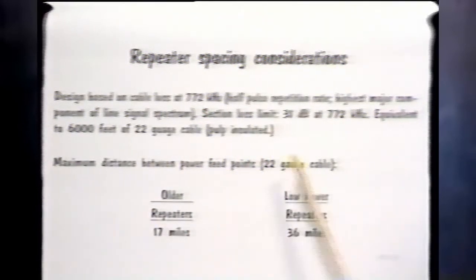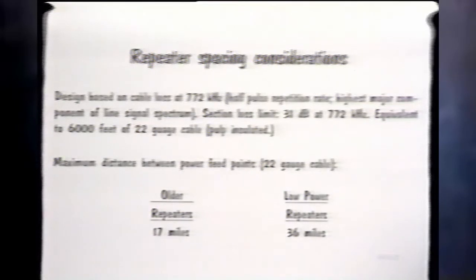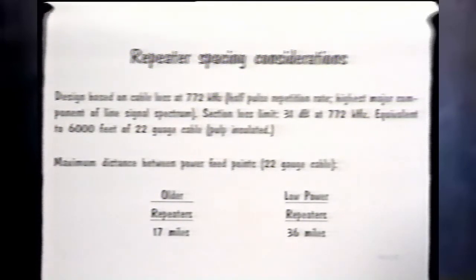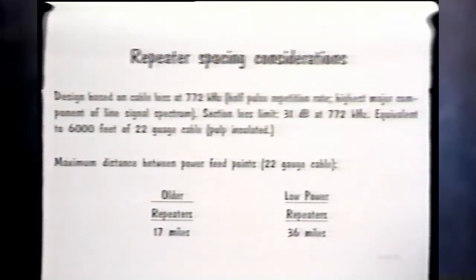The distance between the places where power needs to be fed is a function of the available voltage, the resistance of the cable, and the type of repeater, since different models require different amounts of current. Typically, for some of the older type repeaters, 17 miles between power feed points is practical, and for newer repeaters, up to 36 miles is generally available between the central offices where power is fed over the cable conductors to the repeaters.